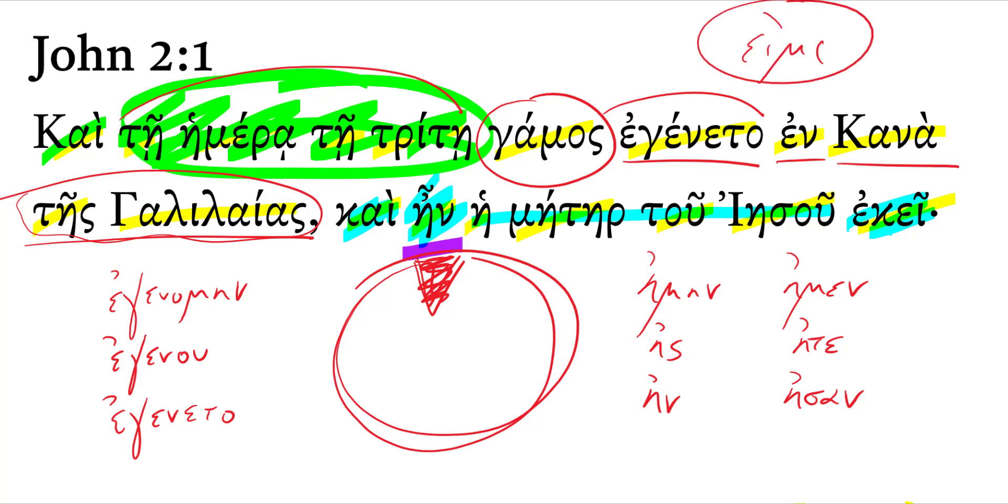Eimi is 'I am.' And the imperfect forms of eimi are: emain, es, en, emen, ete, esan. That would just be translated: I was, you were, he was, we were, y'all were, they were.